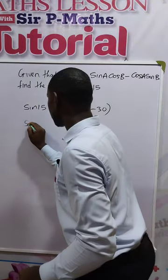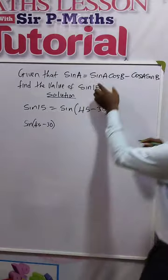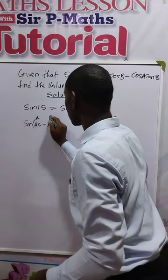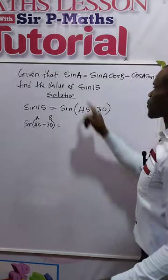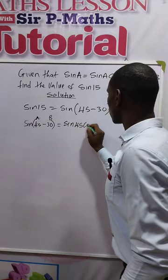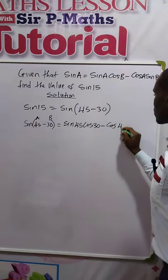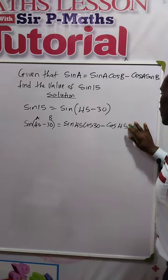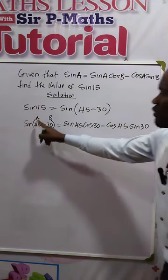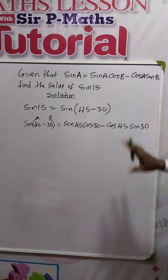So we'll be having sin 15, 45 minus 30, to distribute it over this identity. This is our A and this is our B, right? So we're going to be having sin 45 cos 30 minus cos 45 sin 30.